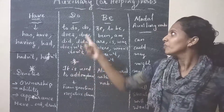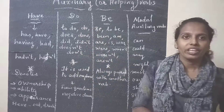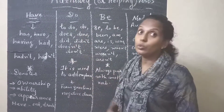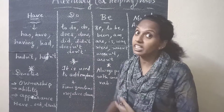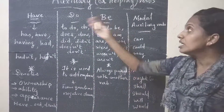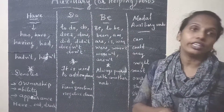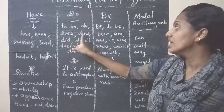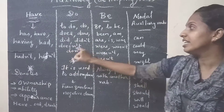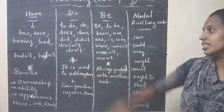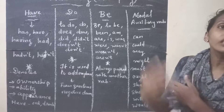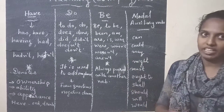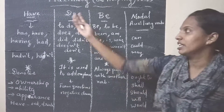Now let's go to 'do.' In a previous video I have explained do, does, and did. This is also considered an auxiliary verb. Its forms are: do, does, did, and don't. All these words are auxiliary words.